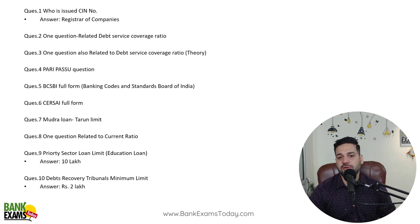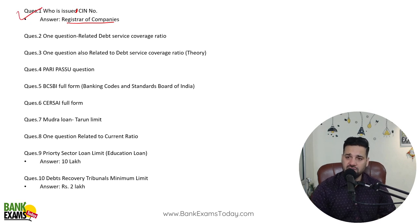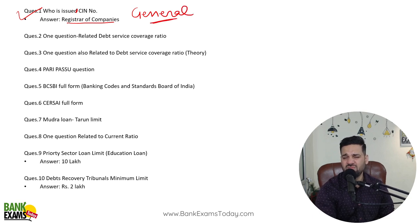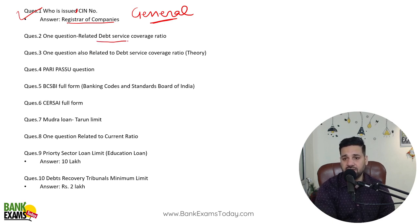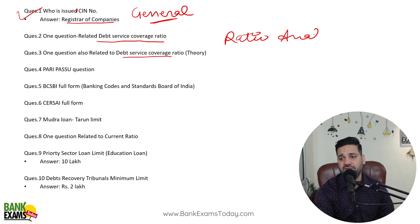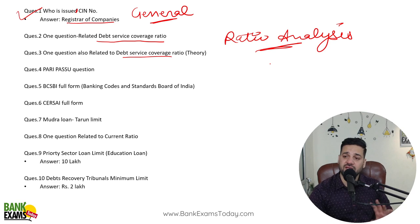Now the professional knowledge section: who issues the SIN number — the Registrar of Companies issues the SIN number. This is a general topic. You don't really need to sit and read the entire Companies Act for this — that is not really relevant. Debt service coverage ratio was there. I would say ratio analysis covers quite a few questions when it comes to the Credit Officer syllabus. Ratio analysis has quite a few questions.